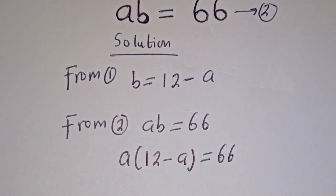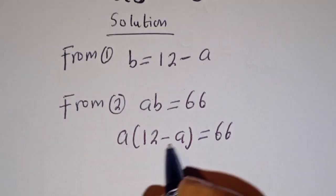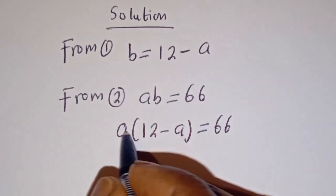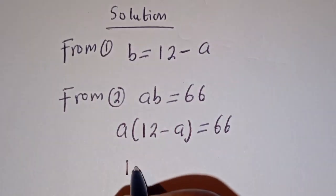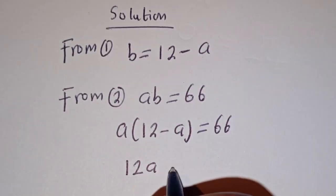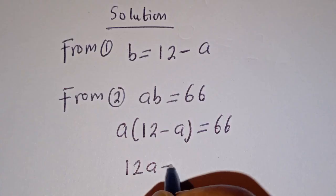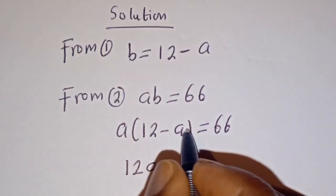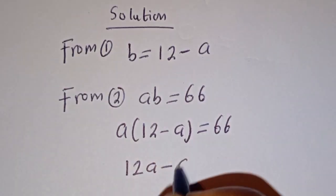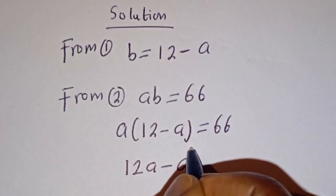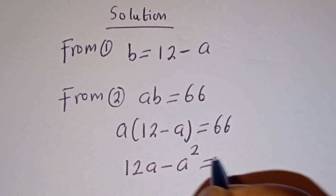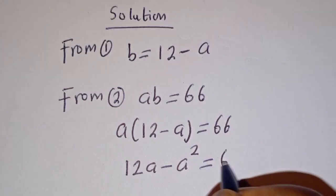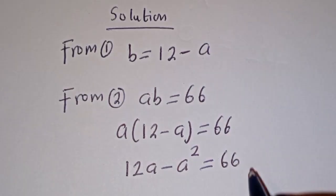Let's open the bracket: A multiplied by 12 is 12A, minus A multiplied by A is A squared, so 12A minus A squared is equal to 66.